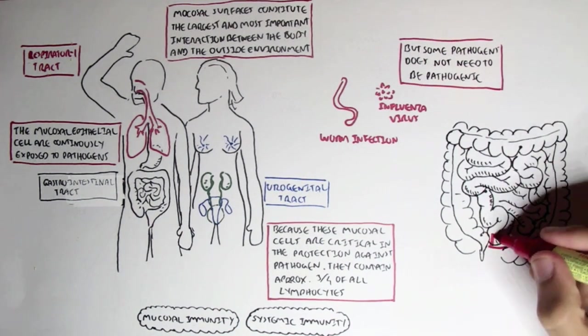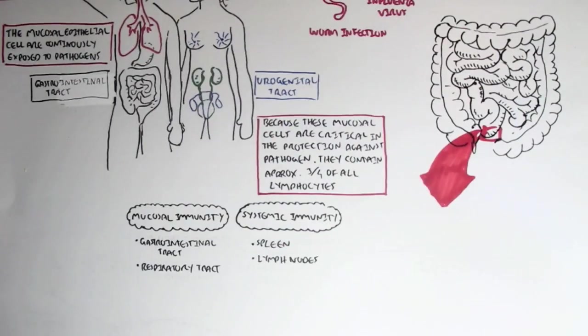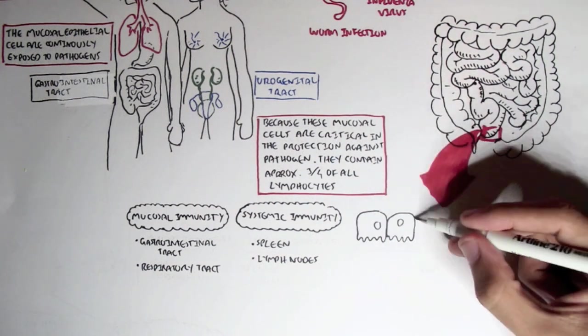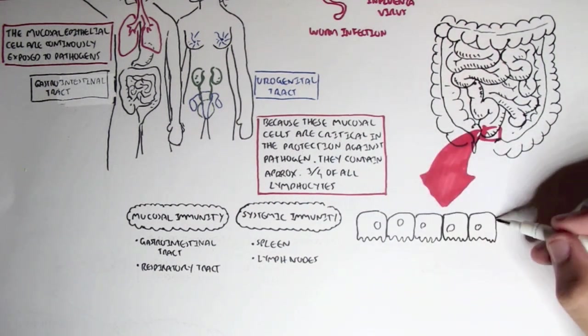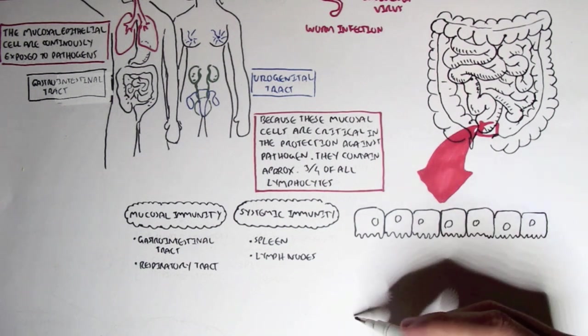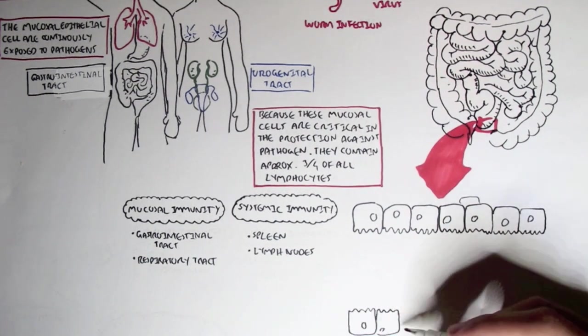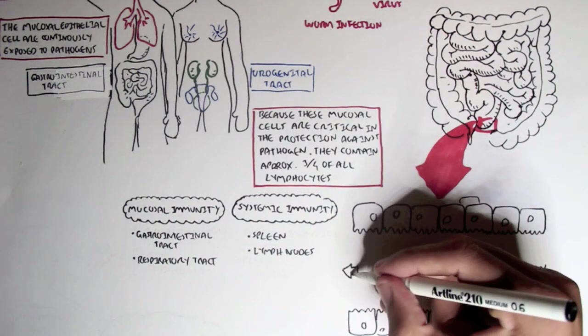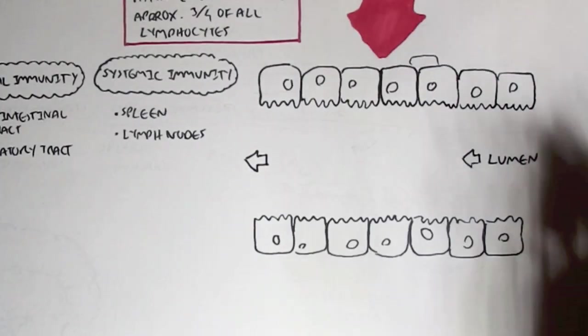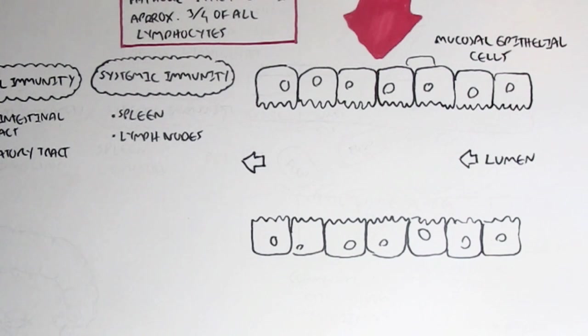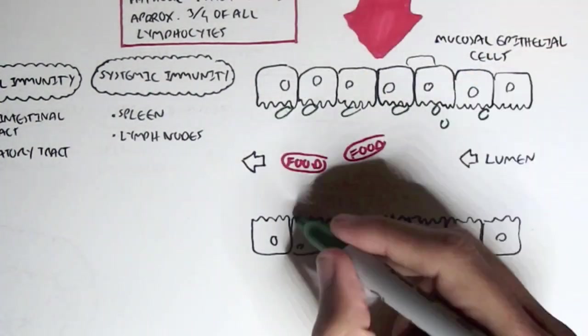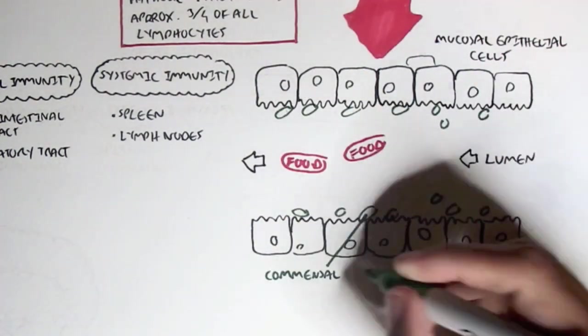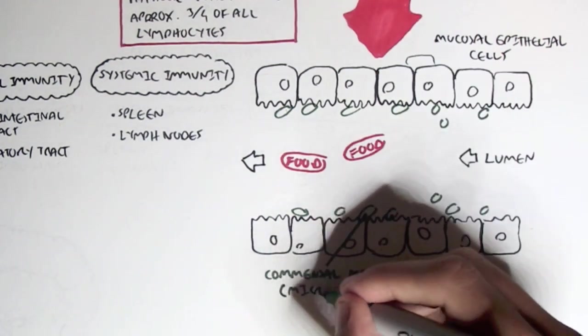So if we take a cross section or a section within the small intestines we can see what we mean by non-pathogenic pathogens. Here we have the mucosal epithelial cells lining the intestinal tract and we have the lumen where food passes through. Within the lumen on mucosal surfaces we have what's called commensal microorganisms or bacteria which help in food digestion.